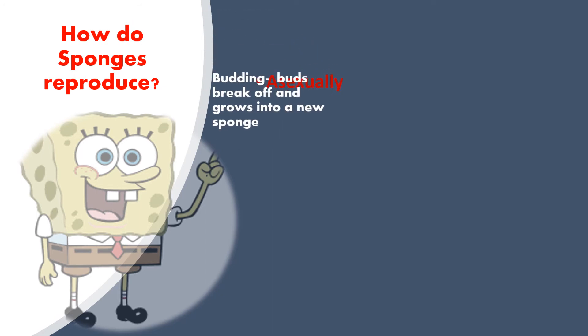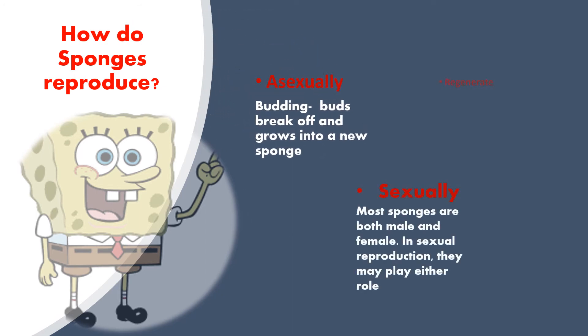Like all living things, sponges must reproduce. Sponges can reproduce asexually by budding — this happens when buds break off and grow into a new sponge. Sexually, most sponges are both male and female, and in sexual reproduction they may play either role. Sponges can also regenerate, which is our vocabulary word meaning the ability to regrow body parts that are lost. This says a lot about our sponge population.